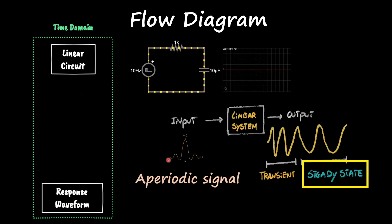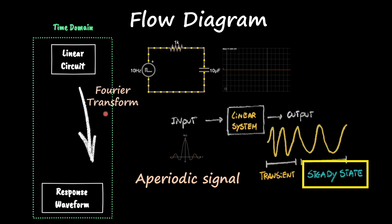Now, if our input is an aperiodic signal, something that does not have a constant period or a period, then we're going to use Fourier transforms.